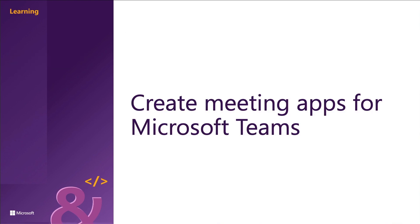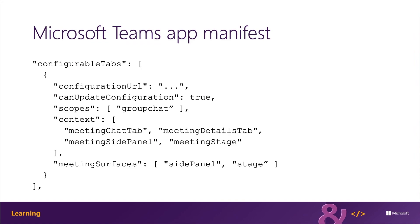Now let's look at how to create meeting apps for Microsoft Teams. Developers can create custom meeting apps for Microsoft Teams meetings using many of the same techniques as other Microsoft Teams extensibility points, such as tabs and bots. To enable your app to be available within Microsoft Teams meetings, you need to make a few changes to your app's manifest extension file. These settings are all defined in the manifest.json's configurable tabs array. The tabs scope array must include the group chat scope, which defines who can access the app.